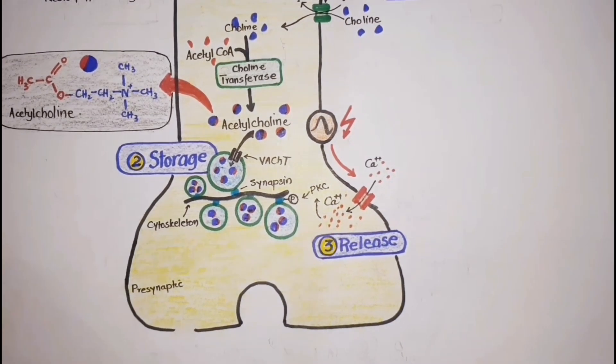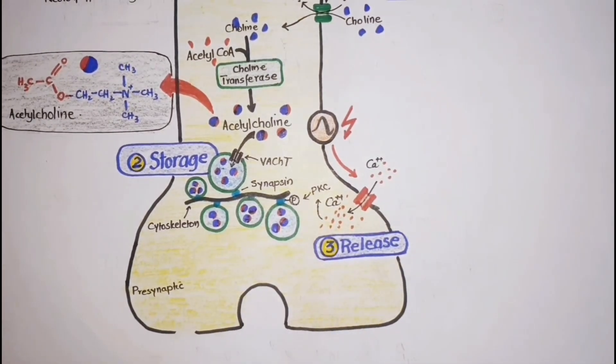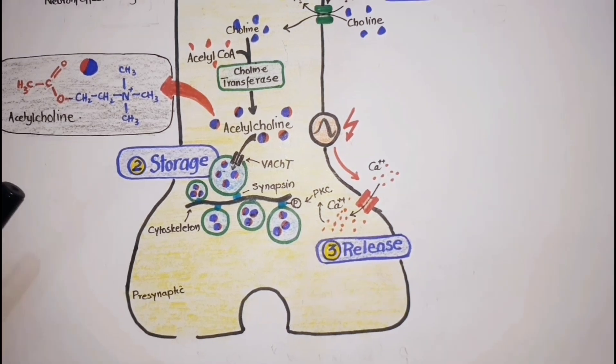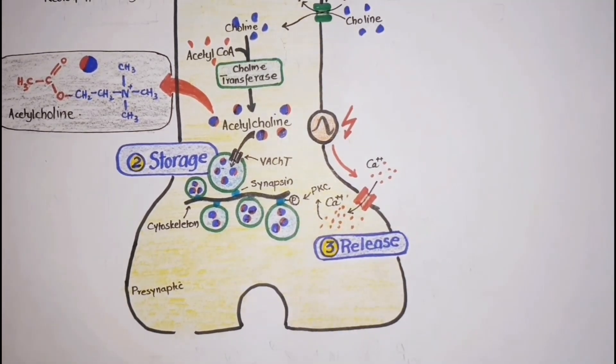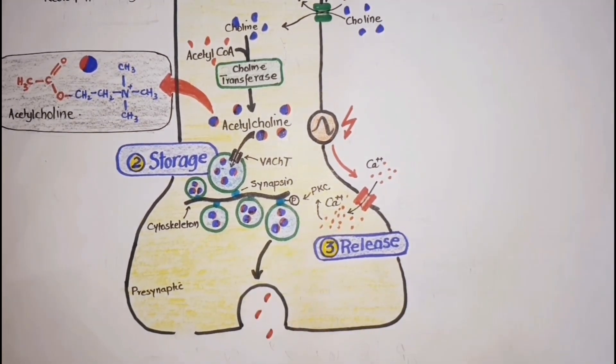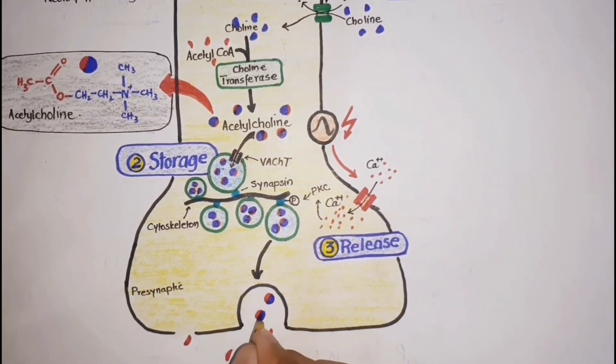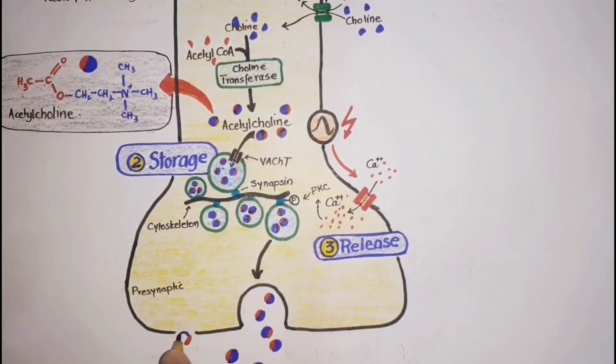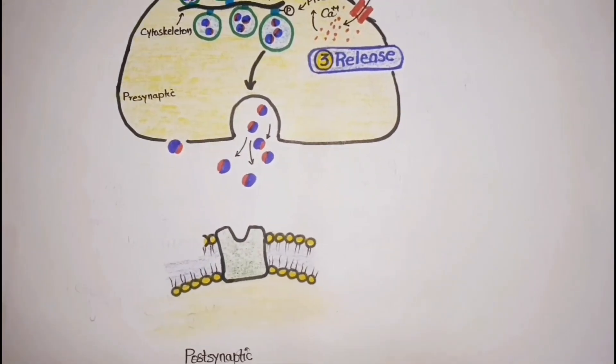As a result, vesicles close to the membrane are detached from their attachments, and the vesicular membrane fuses with the presynaptic membrane. The exocytotic ejection of acetylcholine occurs into the synaptic cleft.